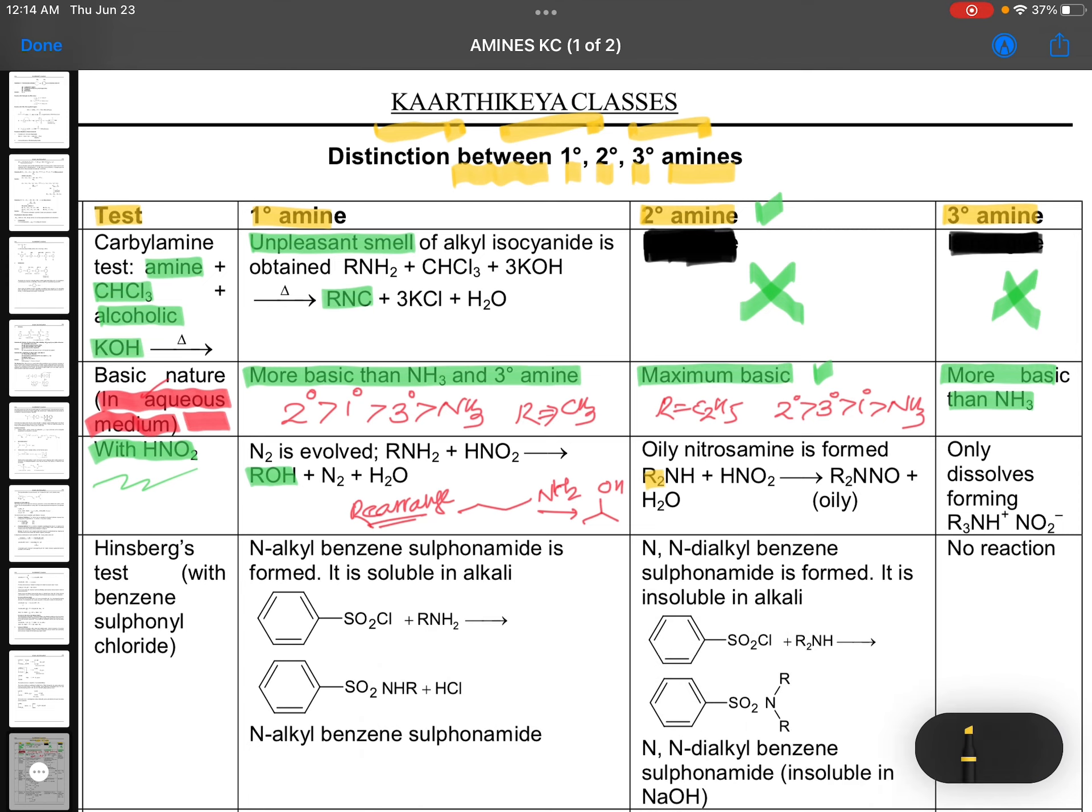And when it comes to the secondary, R2NH secondary, they are converted into oily nitrosoamine. R2NNO, that is N-nitrosoamine. N-nitrosoamine is with oily nature. When it comes to tertiary, it just dissolves. Dissolves forming one salt. No special about this.